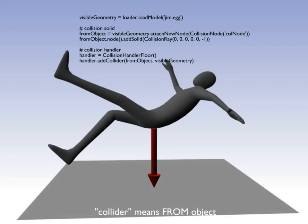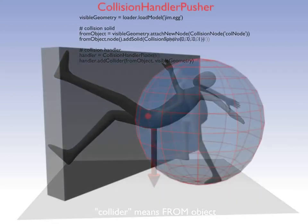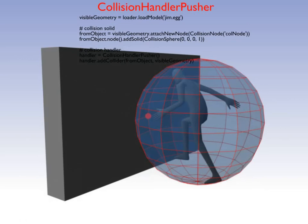Collision handler pusher keeps objects from going through each other, and also smoothly slides the from object along the into object if they collide at an angle. There are a few other collision handlers like collision handler event, collision handler queue, and physics collision handler, which is meant to be used with Panda's built-in physics engine. Collision handler event can be used to generate a Panda event when collisions occur. The Panda manual explains all of them in detail.